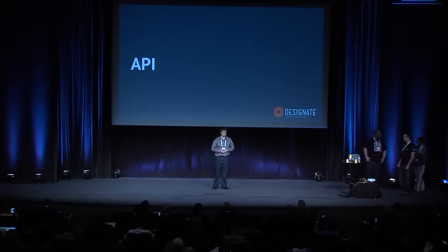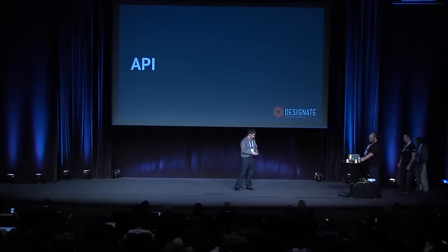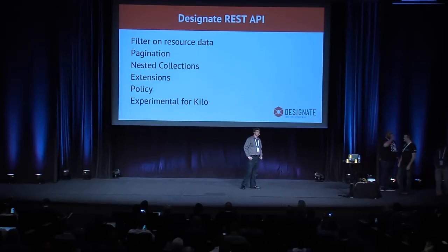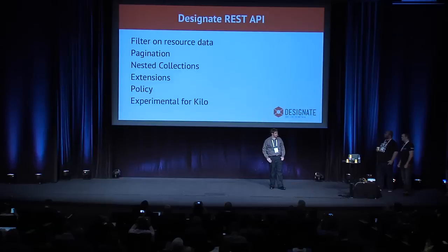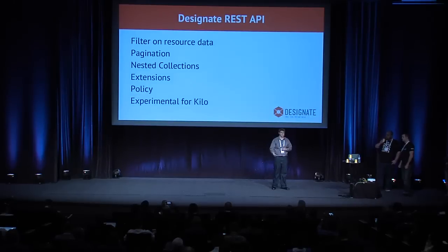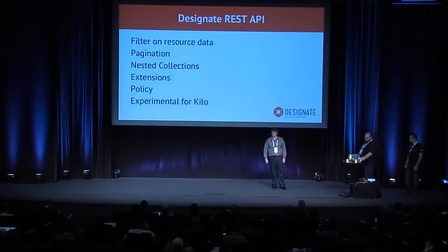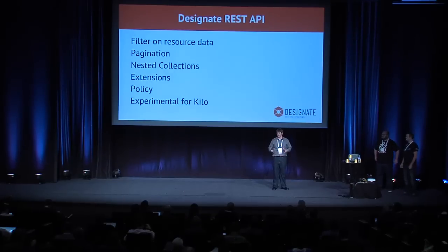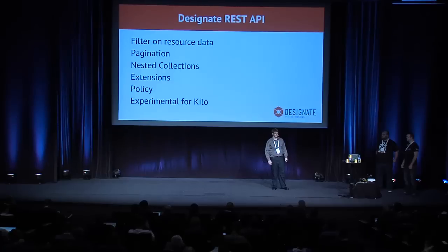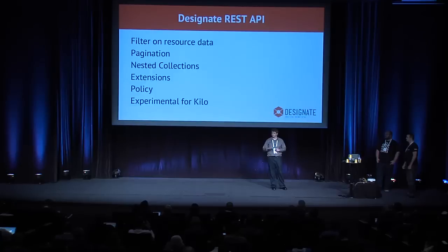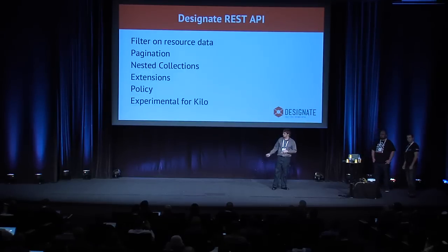Now that you know what Designate is, I'll explain how you can work with it in your applications and services. Designate features a RESTful API like any other OpenStack service. Key features include filtering on resource data — for example, give me all domains where the domain name equals a specific value — paginating queries to the API when you have a lot of resources, and nested collections that allow focused changes to minimize the number of queries needed. The API is easy to extend, has robust policy enforcement with different permissions for users versus admins. The version 2 API is currently experimental and Kilo should be the last cycle before it's stable.